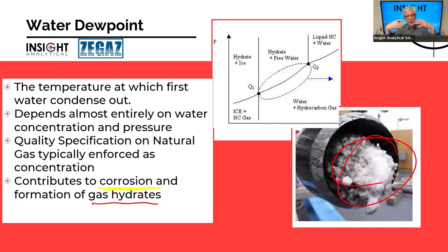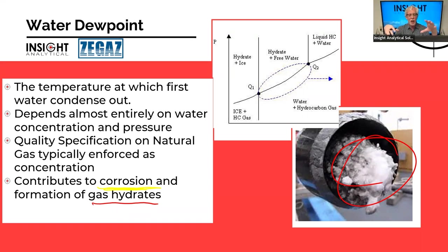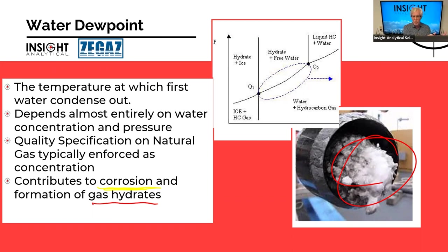As water droplets form in a pipeline, they bring in methane and form this complex clathrate structure that builds up until entire pipelines get blocked — plants will talk about 'hydrating off.' This is especially important when plants put in cryogenic units to produce more natural gas liquids, because water dew point control must be excellent before trying to condense out hydrocarbons — otherwise ice and clathrates form. Water dew point is an important part of quality specifications on natural gas, and every pipeline will have a specification on allowable water content.